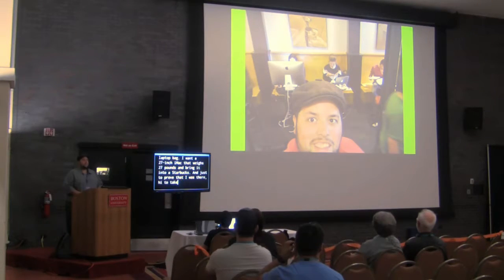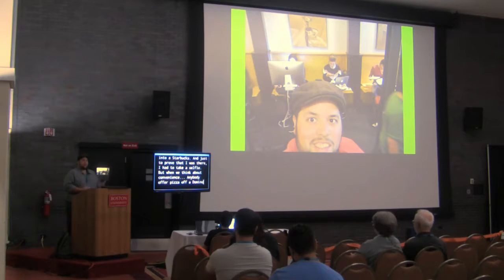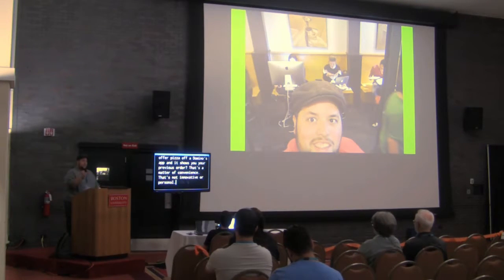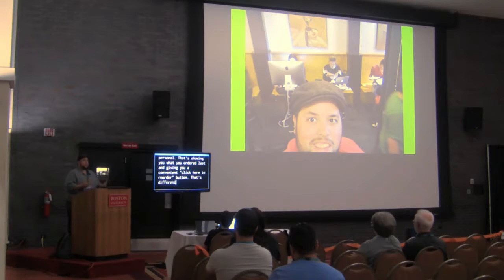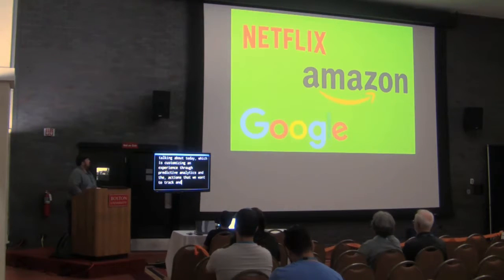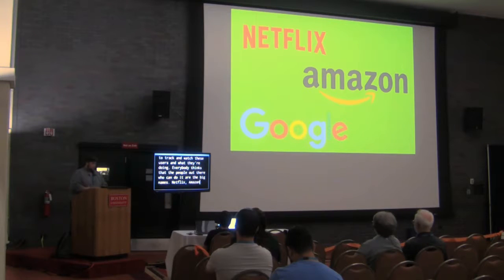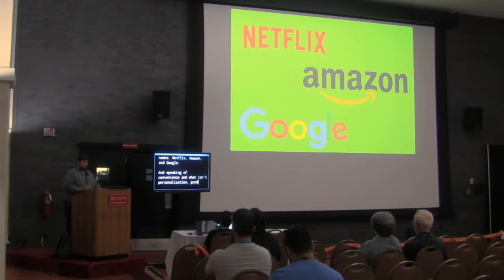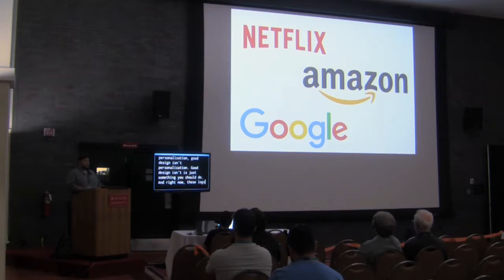When we think about convenience — if anybody's ever ordered a pizza off the Domino's app and it shows you your previous order, that's convenience. That's showing you what you ordered last and giving you a very convenient 'reorder' button. That's very different from what we're talking about today, which is customizing an experience using predictive analytics and tracking user actions. Everybody thinks only the big names — Netflix, Amazon, and Google — can do this. Also, good design isn't personalization. Good design is just something you should do anyway.